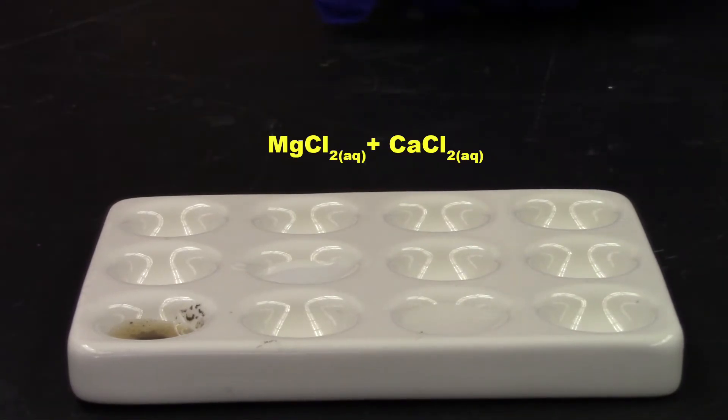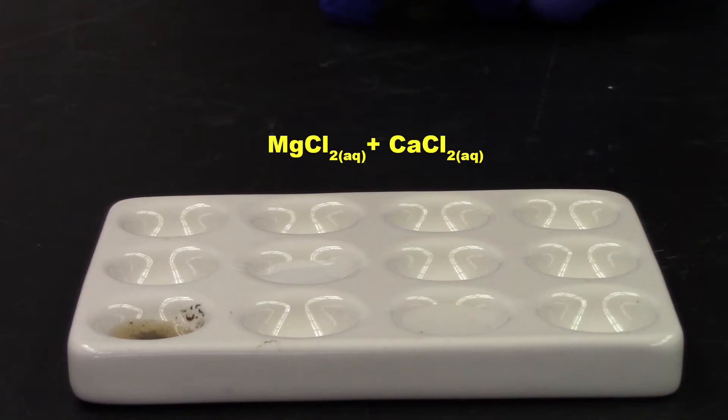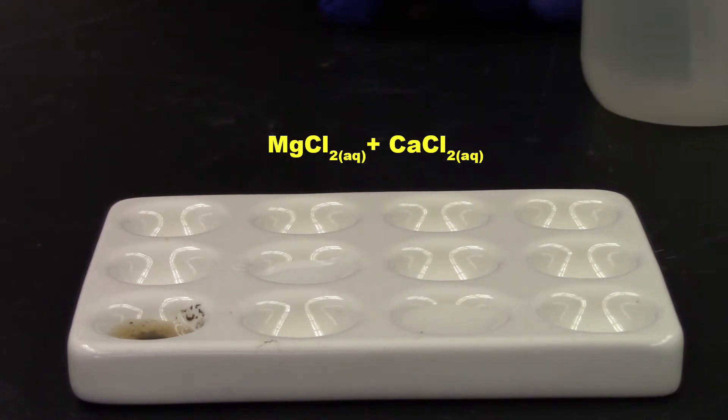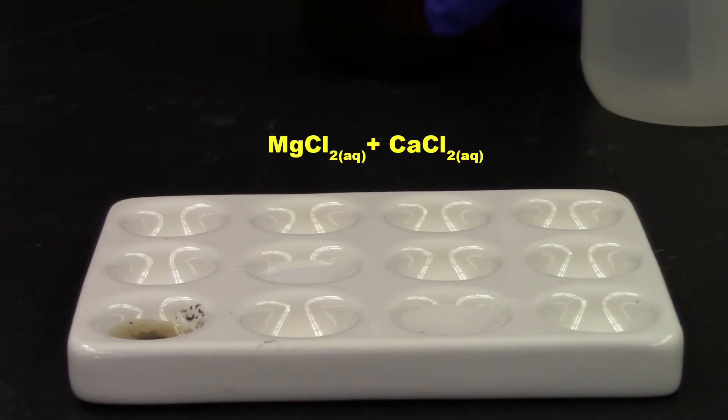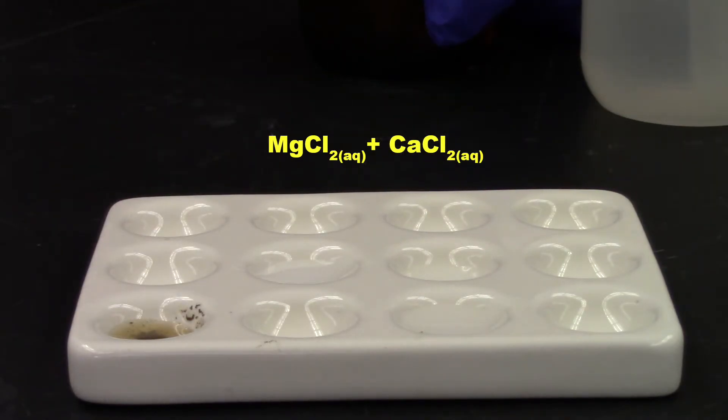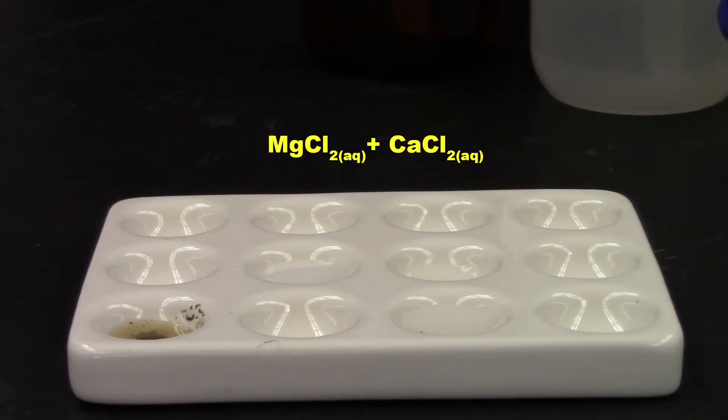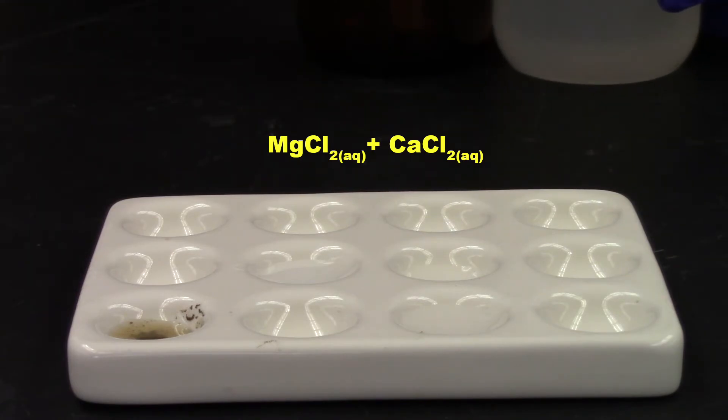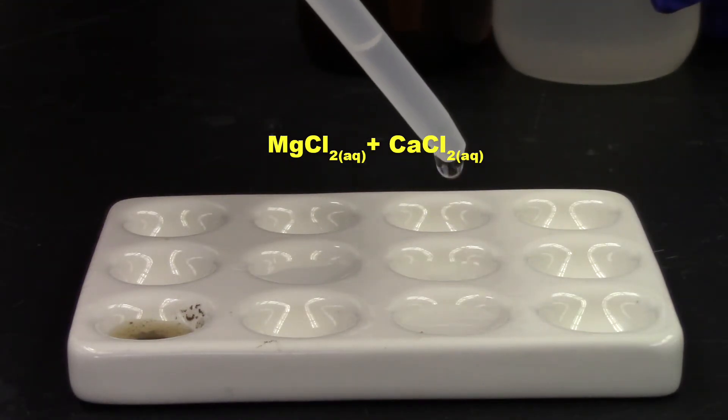And last but not least, we're going to put magnesium chloride and calcium chloride together and see what happens. And we'll do it right here. So here goes the magnesium chloride, a clear, colorless liquid. And here comes the calcium chloride, another clear and colorless liquid.